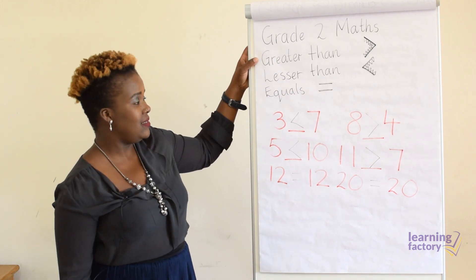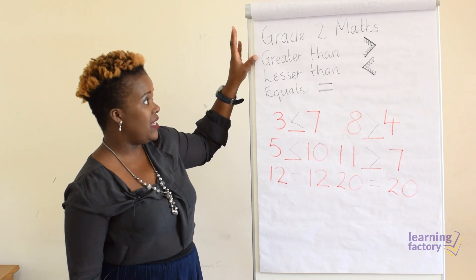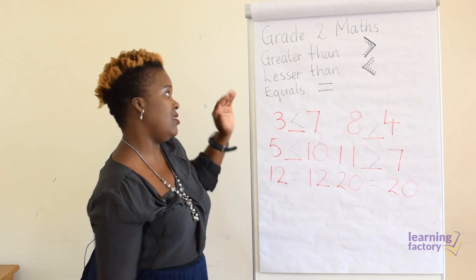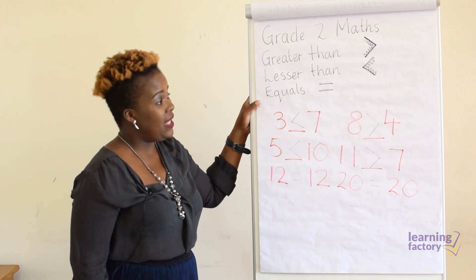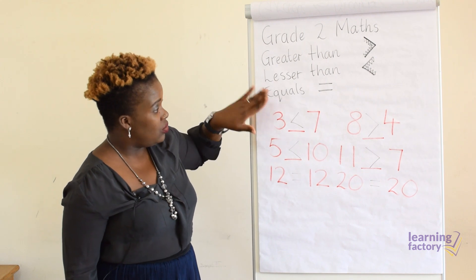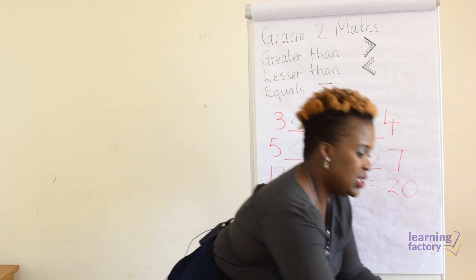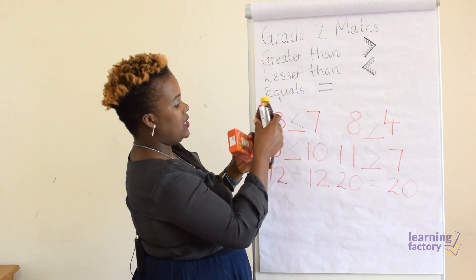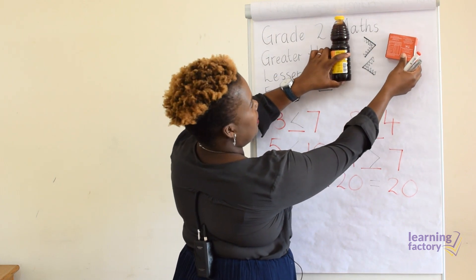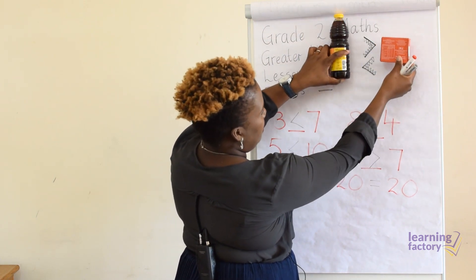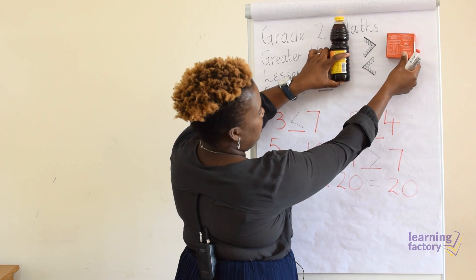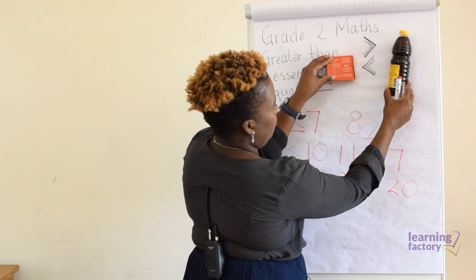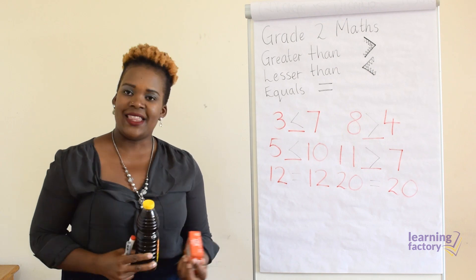Our greater than sign is always facing the left. Our lesser than sign is always facing the right. And our equal sign just looks the same. Make sure whichever numbers or objects you have, your sign is always facing the bigger object or the bigger number. Last one: the vinegar is greater than the jelly box, or the jelly box is lesser than the vinegar bottle.